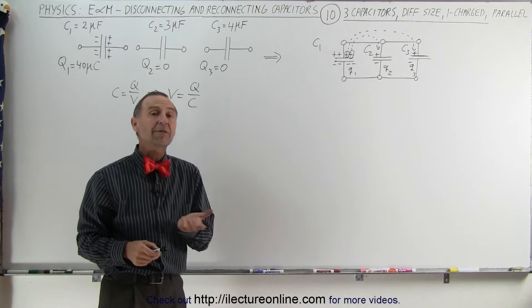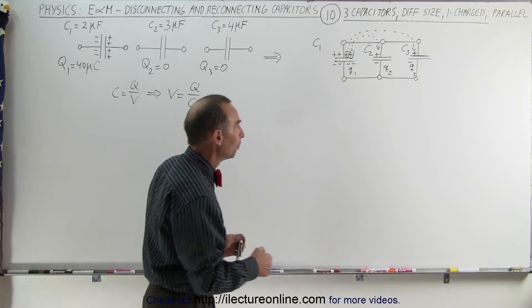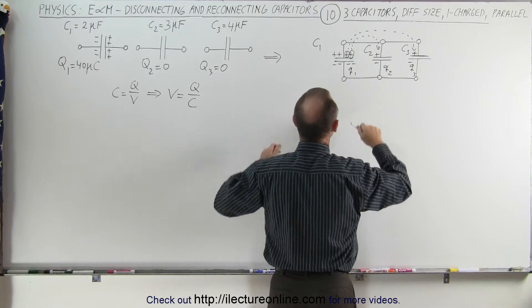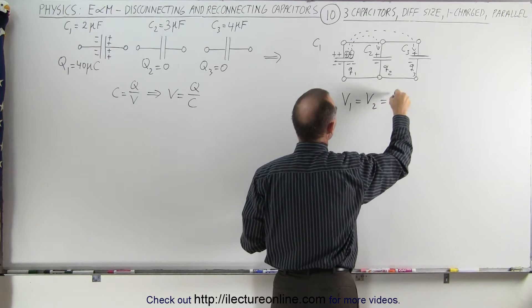The approach to find the amount of charge at the end on each capacitor is the same as before. Since we have parallel connections we know that the voltage V1 is going to be equal to V2 is going to be equal to V3.